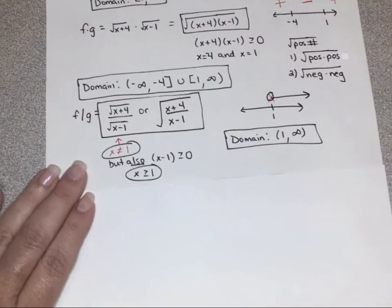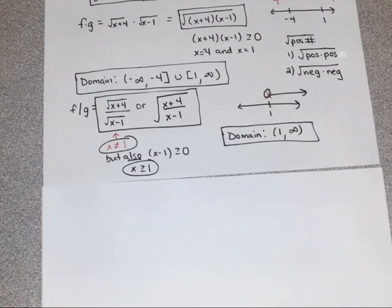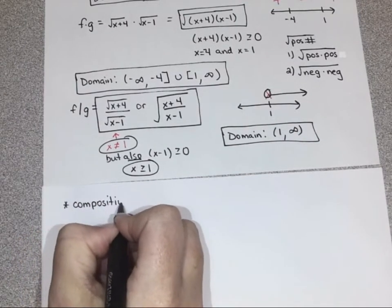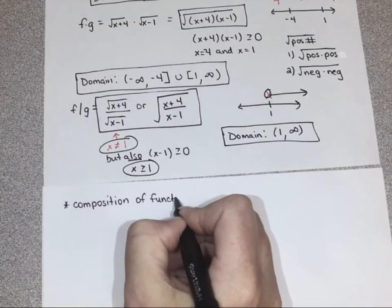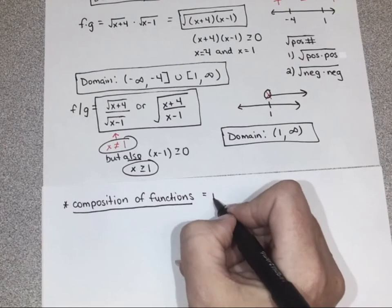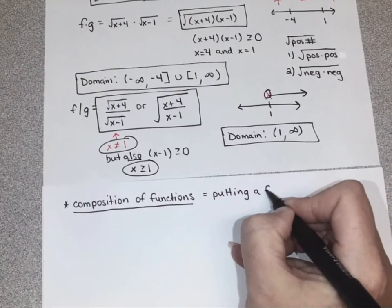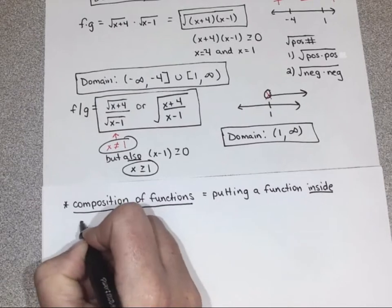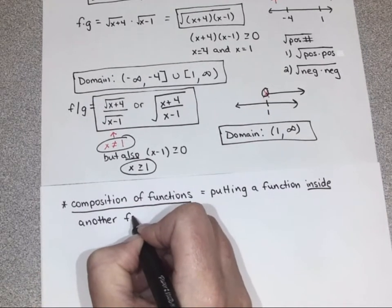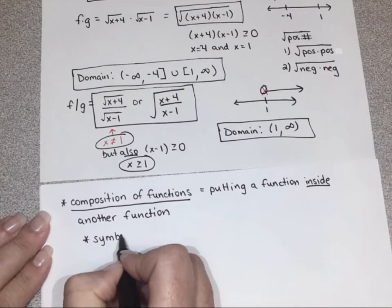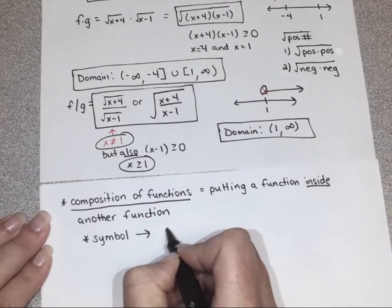So last time and this time we talked about how we can add, subtract, multiply, and divide functions. But there is a fifth way that's not as obvious as those four — a fifth way to combine functions called composition of functions. Notice I'm putting a star by this, which means it's something I want you to know for sure. A composition of functions is putting a function inside another. It is not the same as multiplying, which a lot of students sometimes mistake it for.